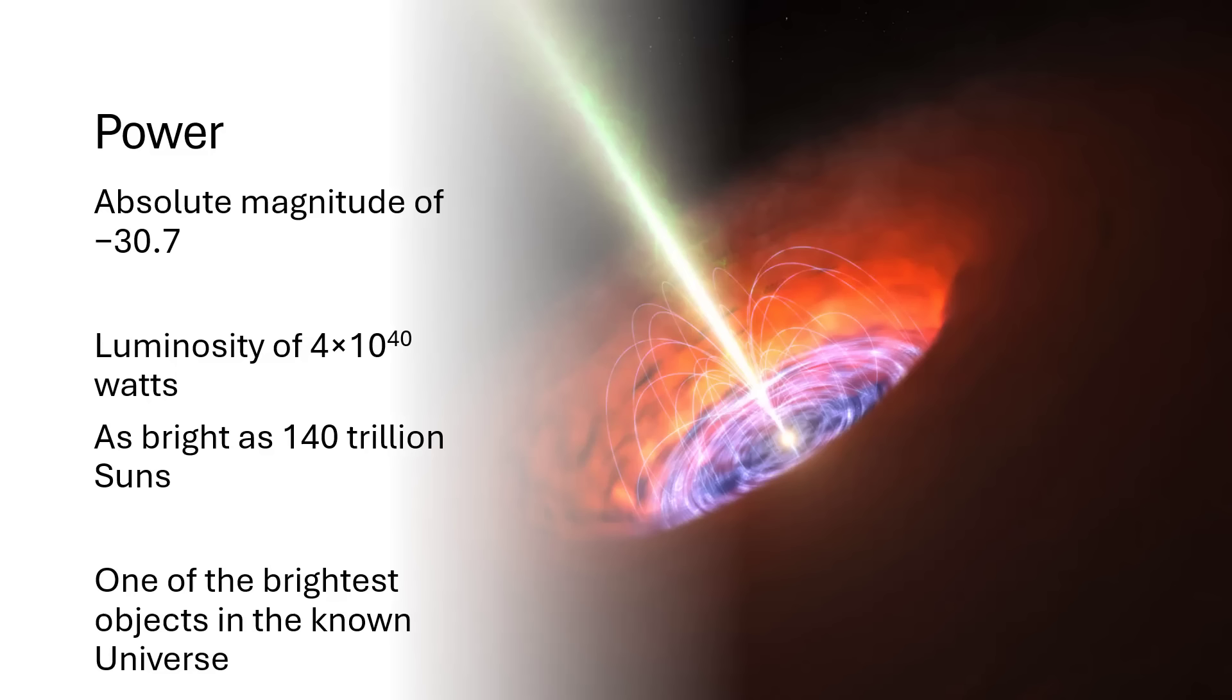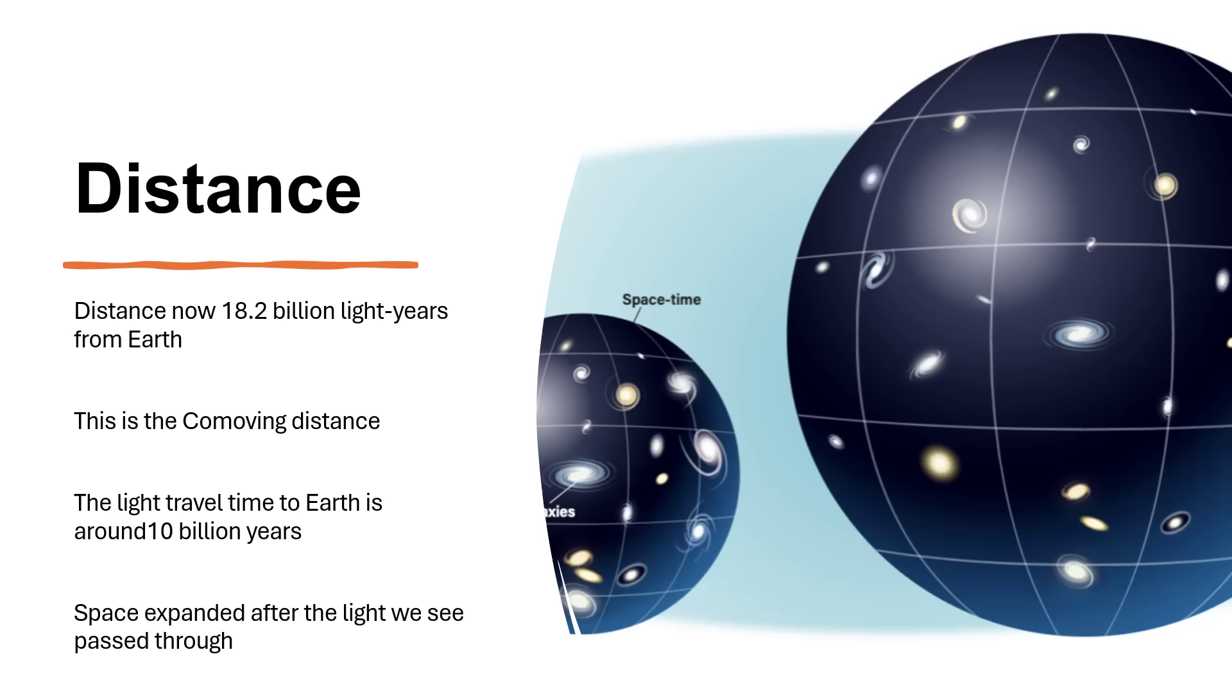It's incredible that we can see it at all, given how far away it is. We estimate that it is now 18.2 billion light years away from Earth. But when we give that number, you have to be a little bit careful. This is what's called the co-moving distance.